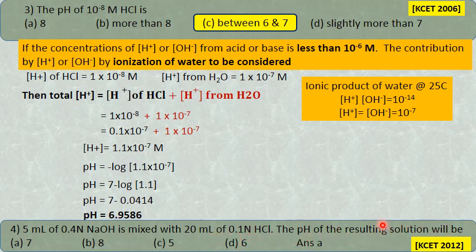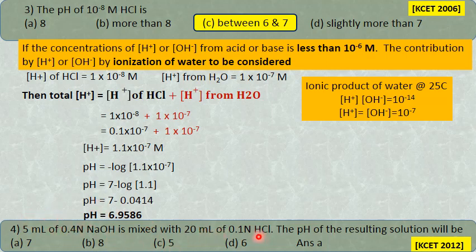Next problem from KCET: 5 mL of 0.4 normal NaOH is mixed with 20 mL of 0.4 normal HCl. For the resulting solution: 0.4 × 5 = 2 equivalents of base, and 20 × 0.4 = 2 equivalents of acid. When acid and base equivalents are equal, the acid will be completely neutralized by the base, resulting in a neutral solution. So pH = 7. Normality times volume gives number of equivalents; if alkali equivalents equal acid equivalents, it is a perfectly neutral solution.